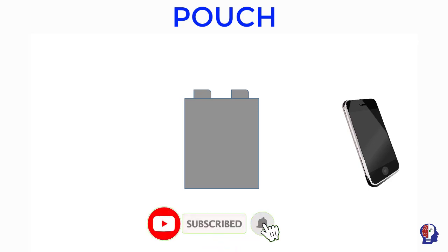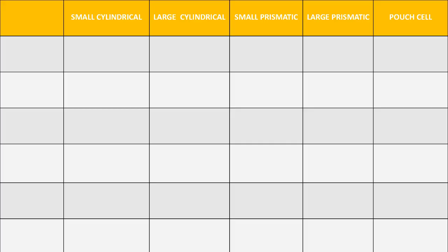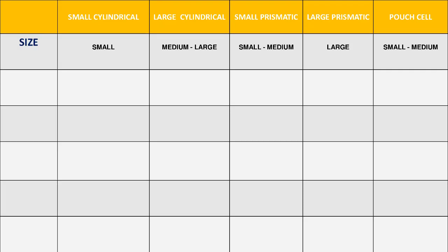Now let's compare different types of cells and their different aspects. In this table, you will see different types of cells: small cylindrical cell, large cylindrical cell, small prismatic cells, large prismatic cell, and pouch cell. The cylindrical cells are also differentiated into two different forms — small cylindrical cell and large cylindrical cell. Let's compare these different types of cells and their different characteristics.